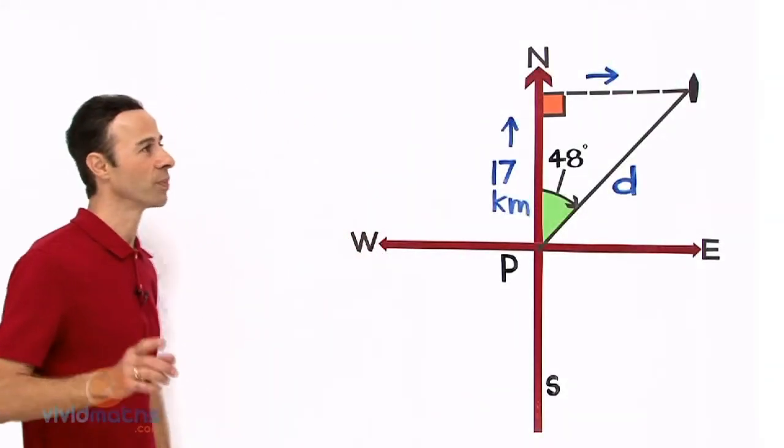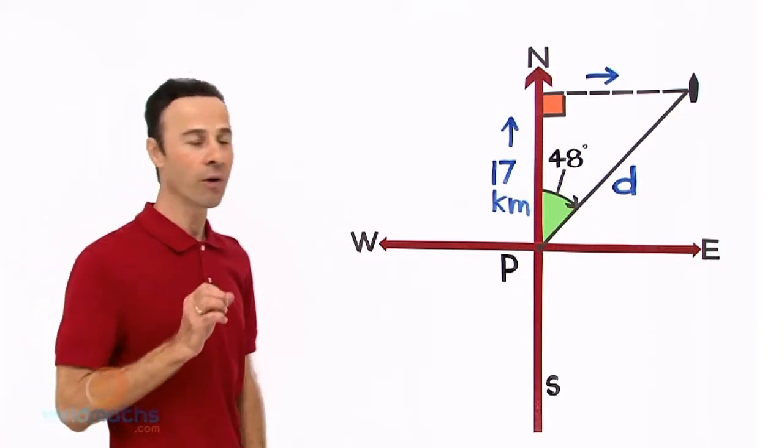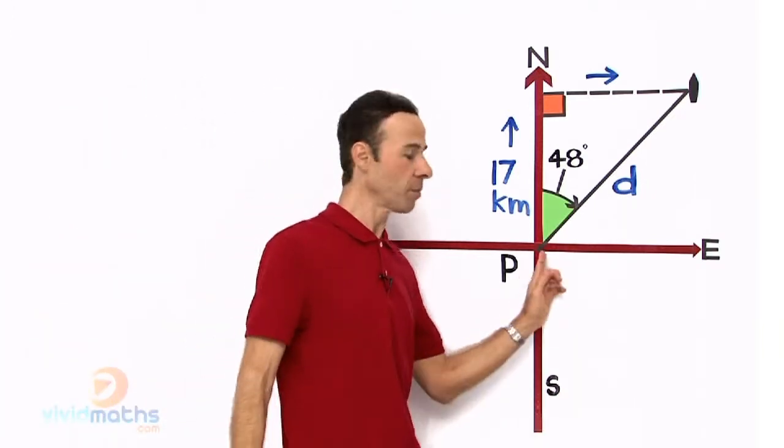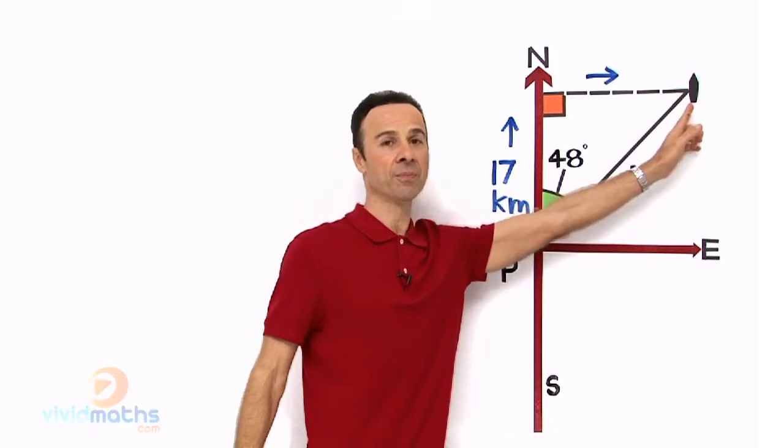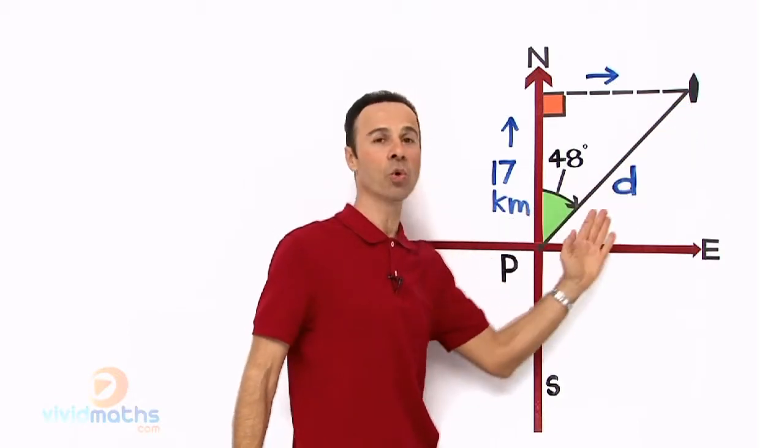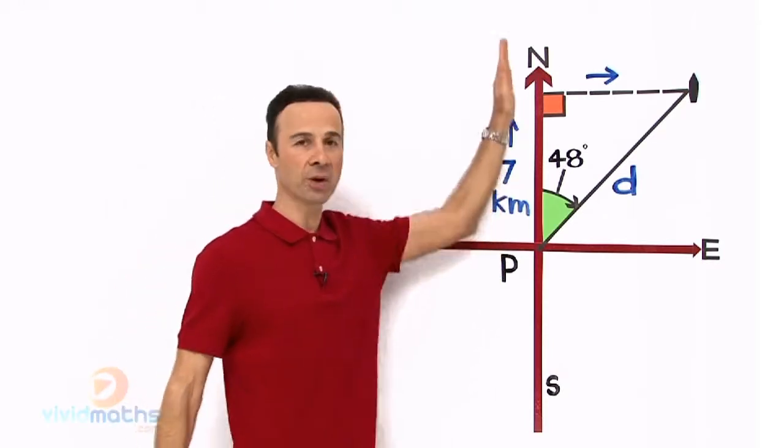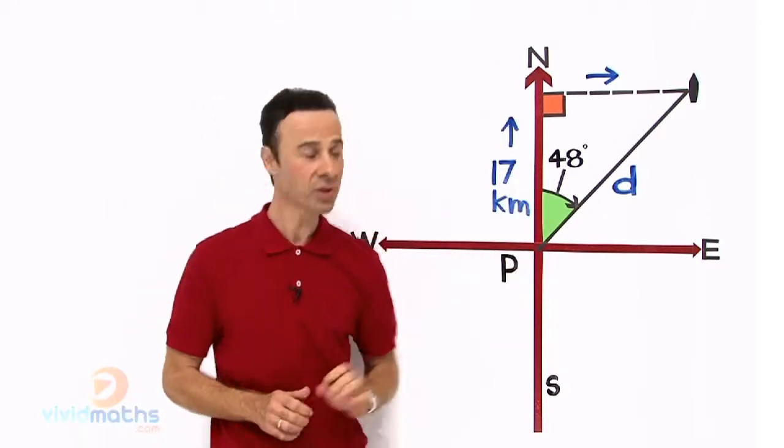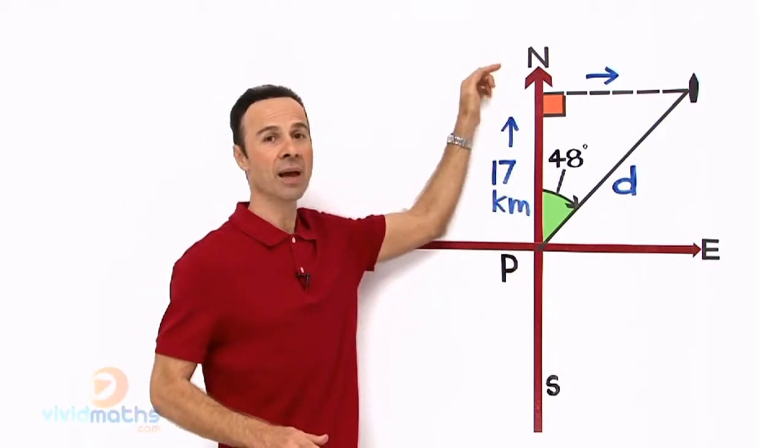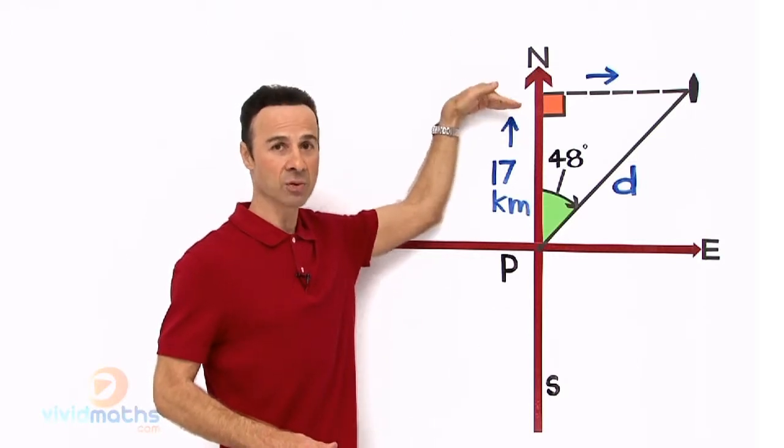What we are asked to do is find out how far the ship is from port to where it is now. So that is the line right there called D. Let's go through it one more time. We have north vertically that way. The ship travels 17 km north and then easterly, which is at right angles to the right.